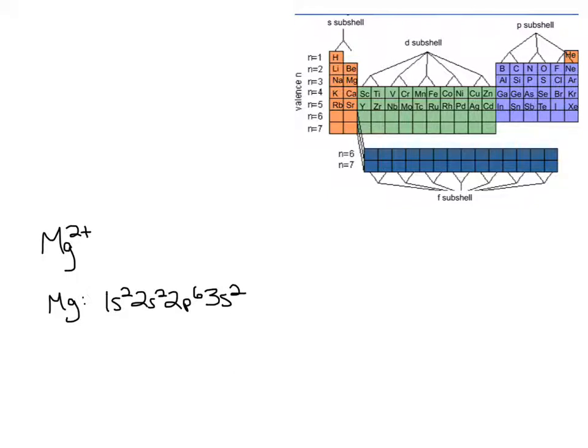So my highest shell is 3. I see a 3 in front. So I'm going to remove two electrons from the third energy level. So for Mg2+, I can just completely get rid of the 3s2 and write 1s2, 2s2, 2p6.